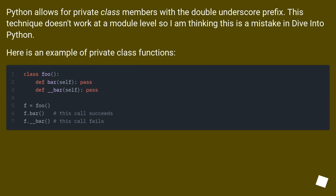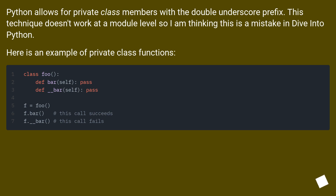Python allows for private class members with the double underscore prefix. This technique doesn't work at a module level, so this is likely a mistake in Dive Into Python. Here is an example of private class functions.